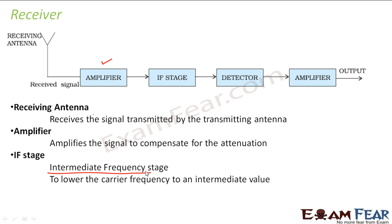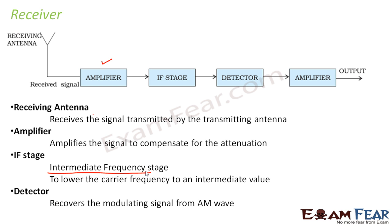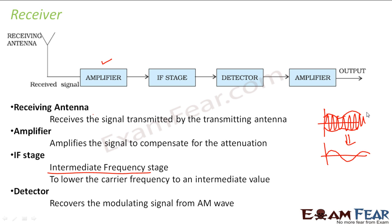The next is the intermediate frequency stage. This stage will lower the carrier frequency to an intermediate value. The carrier wave was recognized by its high frequency, which helped in transmission. But once it has come to the receiver end, we do not need that high frequency anymore. So the intermediate frequency stage lowers the frequency of the carrier wave to an intermediate value. Then comes the detector, which will extract the original message signal from the modulated wave. The modulated wave had a certain shape, and the message signal is what the detector recovers from it.